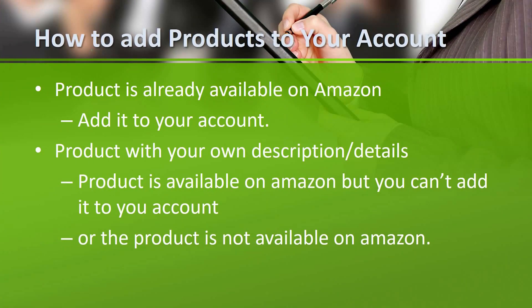The first way is when the product is already available on Amazon — in this case you just add it to your account. The second way is adding the product with your own description, which applies when the product is available on Amazon but you cannot add it to your account, or when the product is not available on Amazon at all. If a product is available on Amazon and you can't add it, it doesn't mean you can never add it.